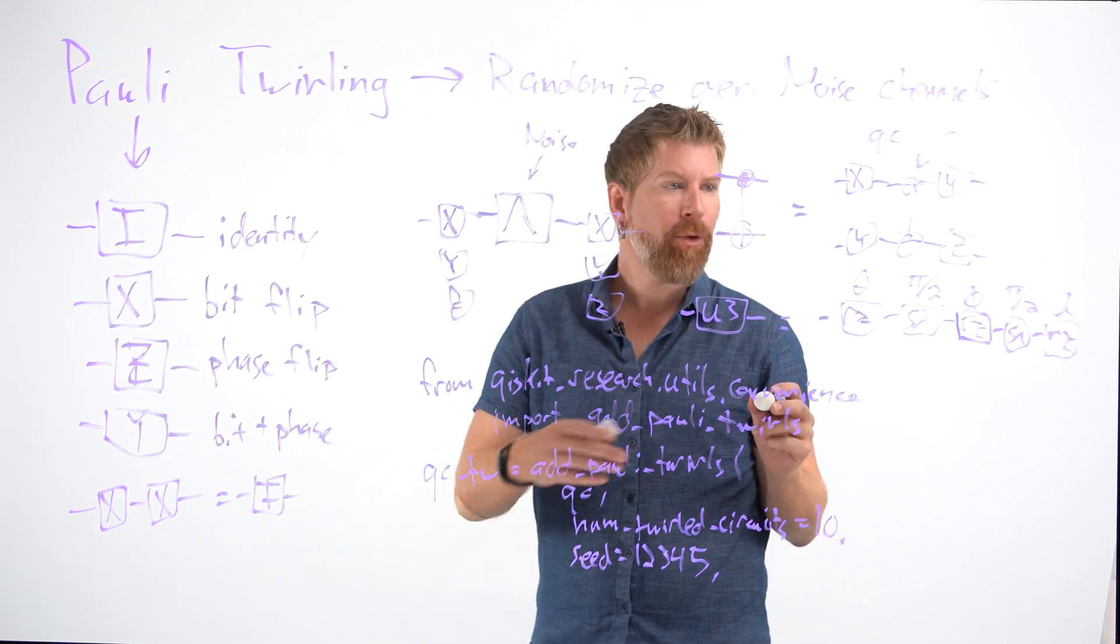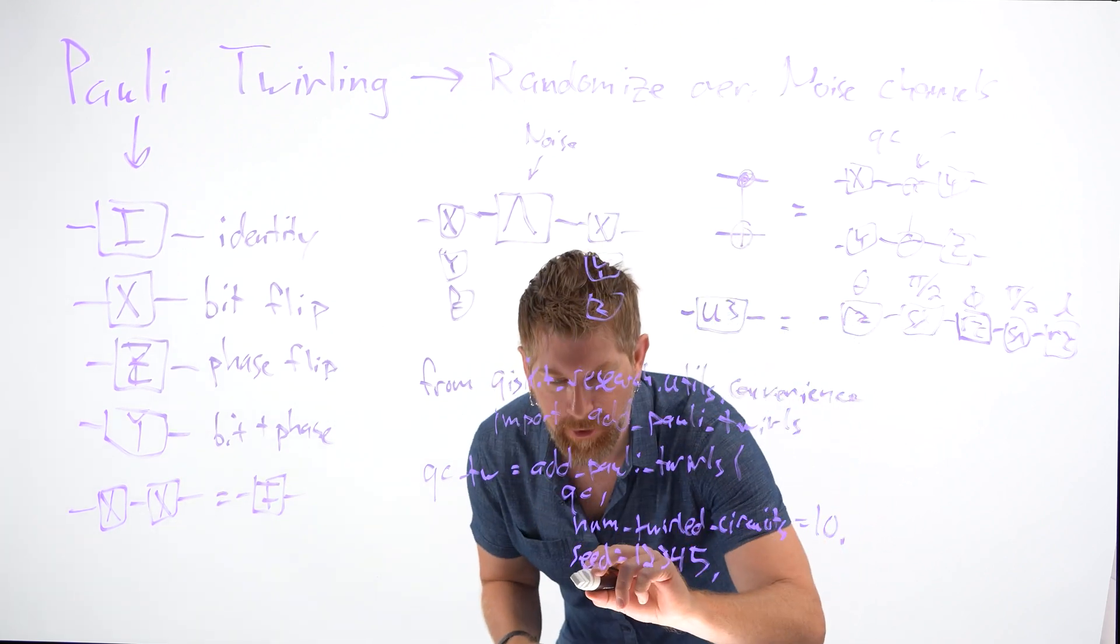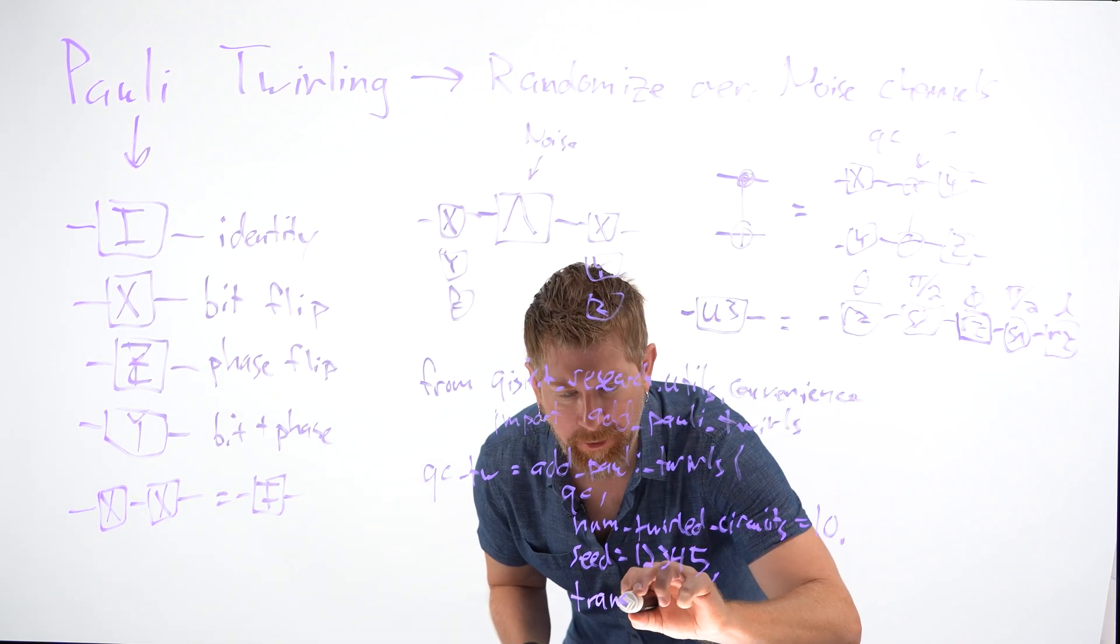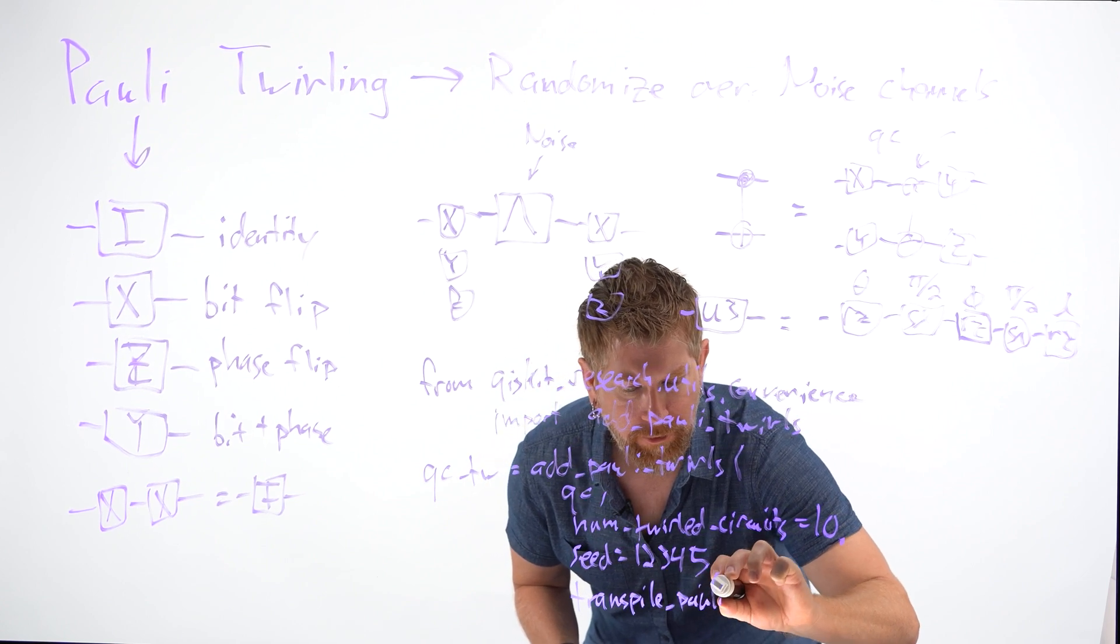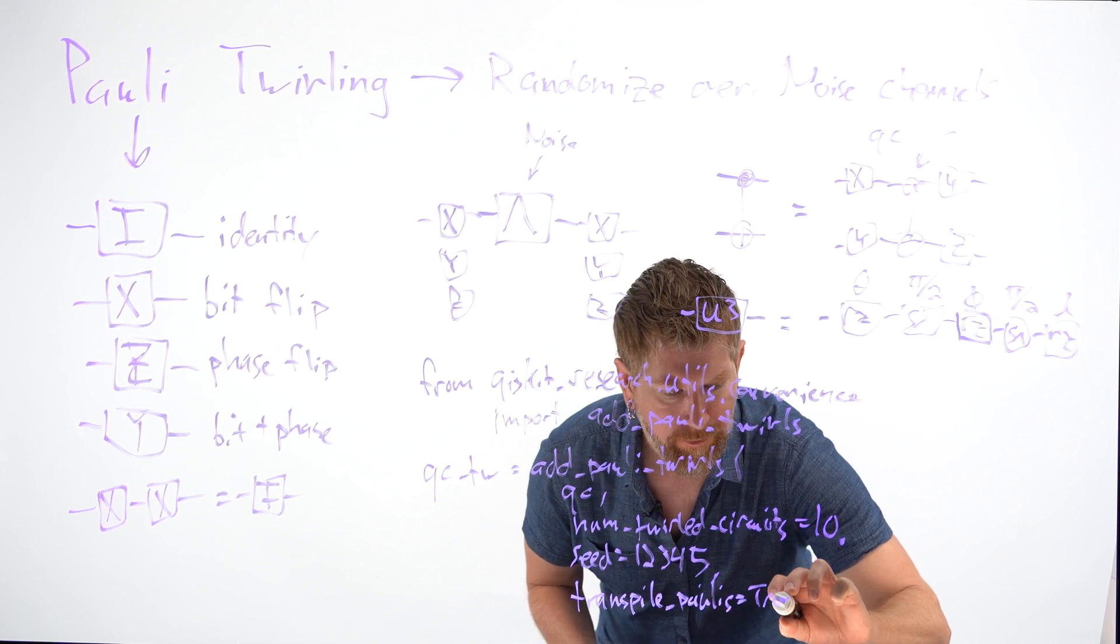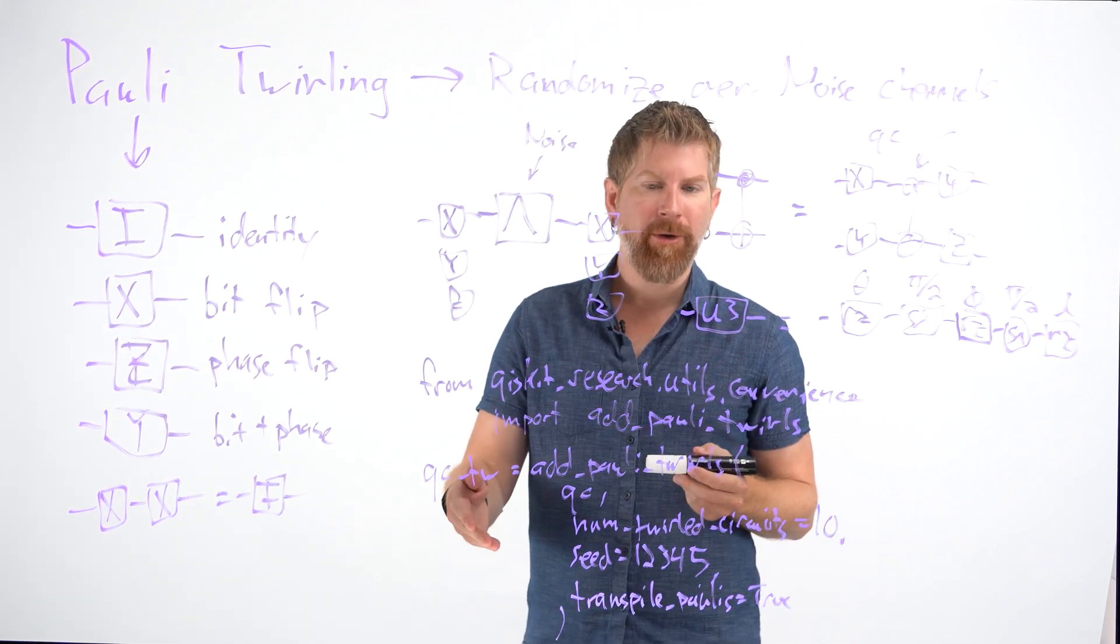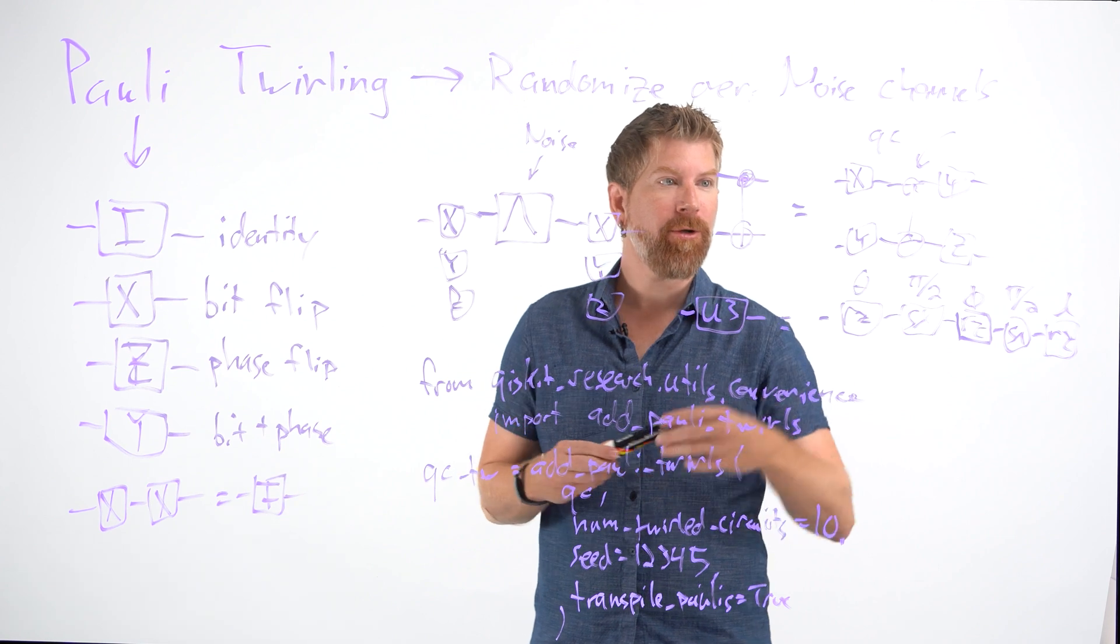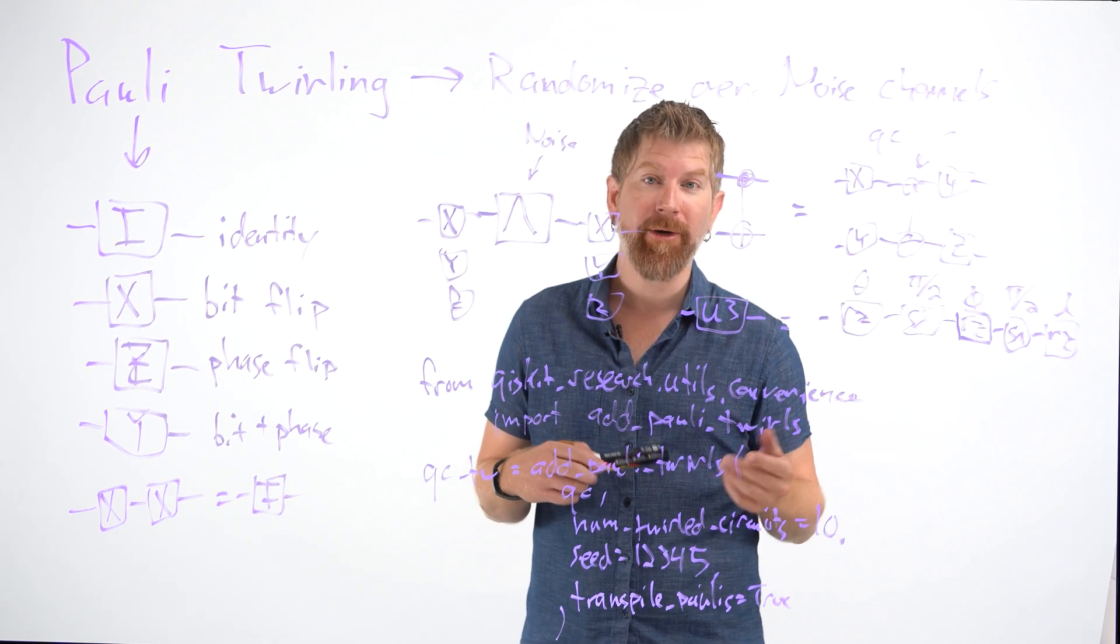And then in the end, if we want to go ahead and transpile these down to the actual microwave pulses, we can set the transpile_polys to true. So in that way, this one line of code will generate the circuits needed to twirl over a random set of pauli twirls, which will help reduce the coherent error in your circuit.